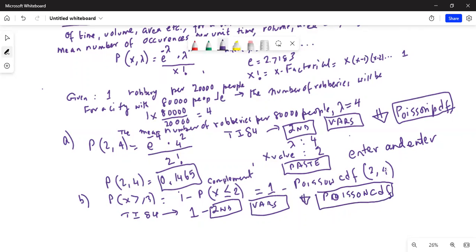So let's do it in the calculator. I first type 1, then minus 2nd vars. And I scroll down to Poisson CDF. Hit enter. My Lambda is 4, and X value is 2. Because I am adding 0, 1, and 2. So I only enter the last value. And then paste. And then again when we are paste, enter and enter.